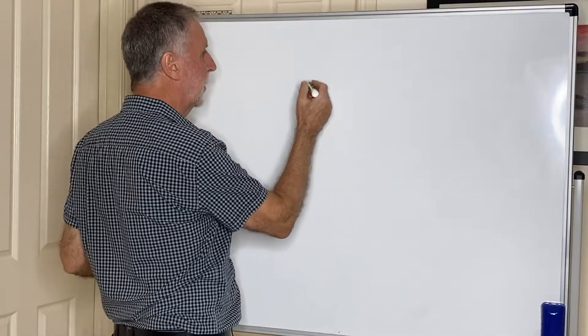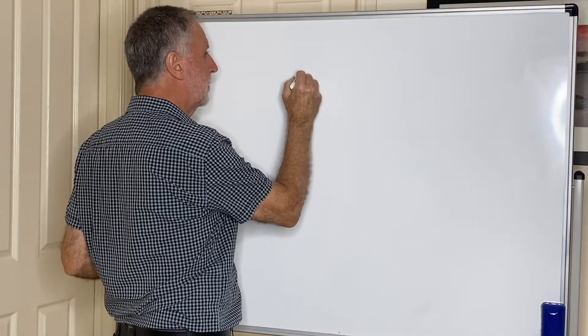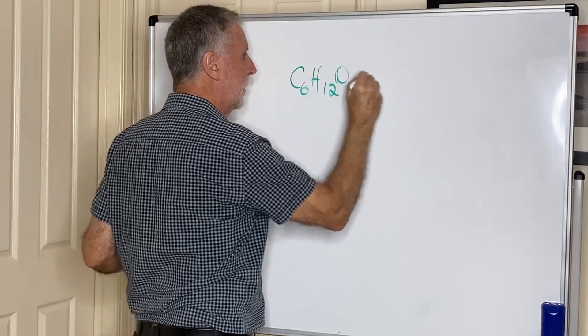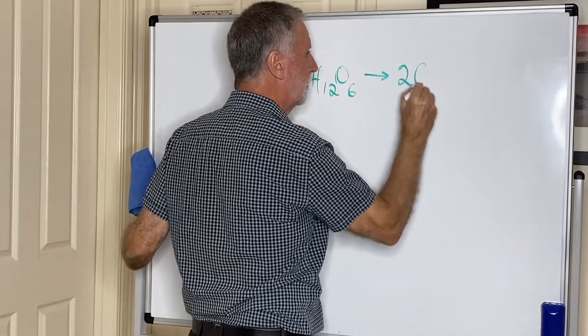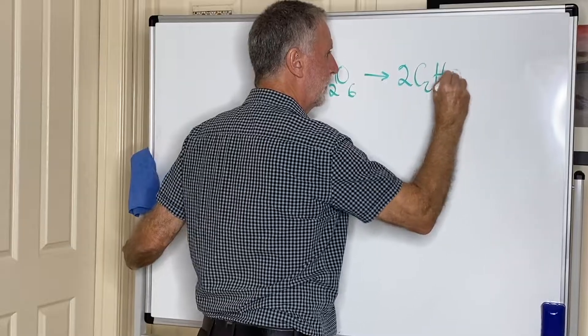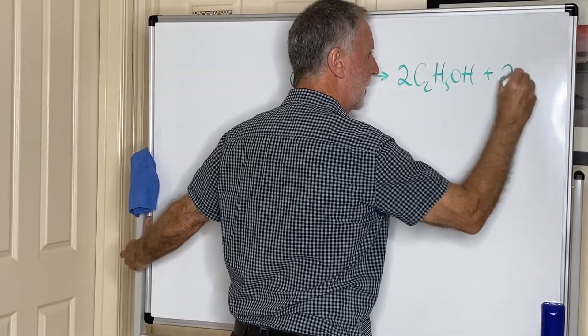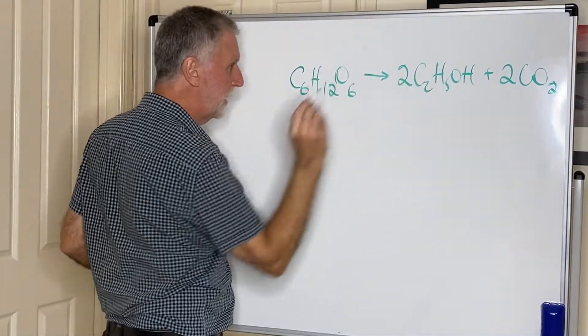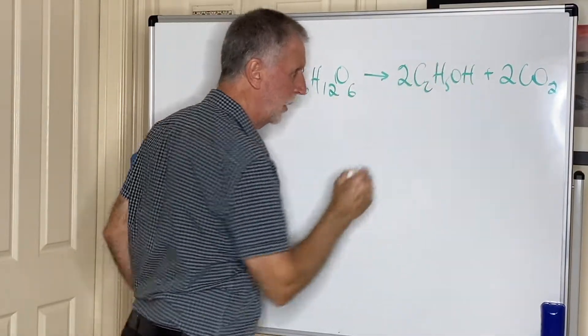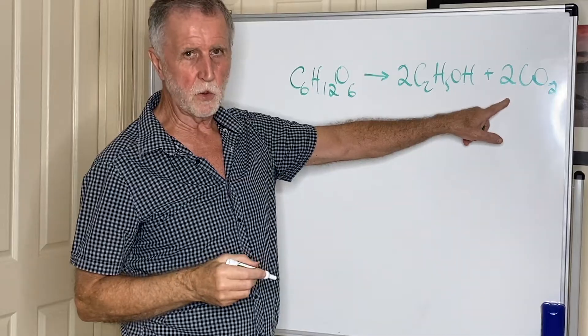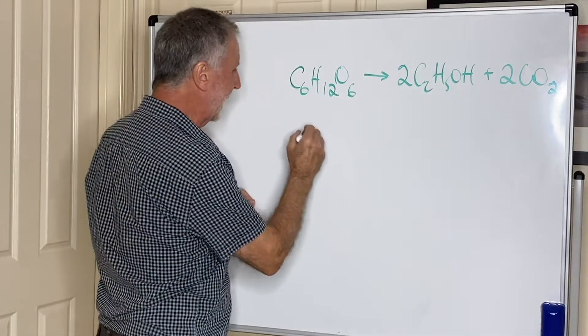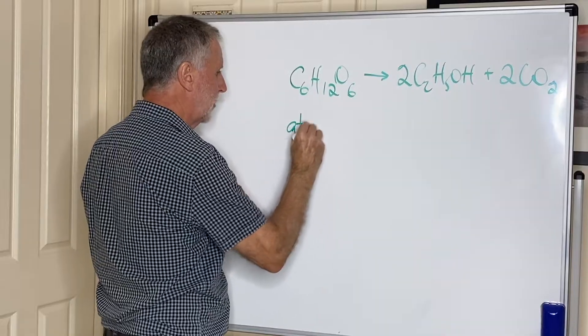For example, if we do a reaction like we had a moment ago—let's say we have glucose, C6H12O6, making ethanol and carbon dioxide—the whole purpose of this fermentation is to make ethanol. We don't want the carbon dioxide, so that's waste.